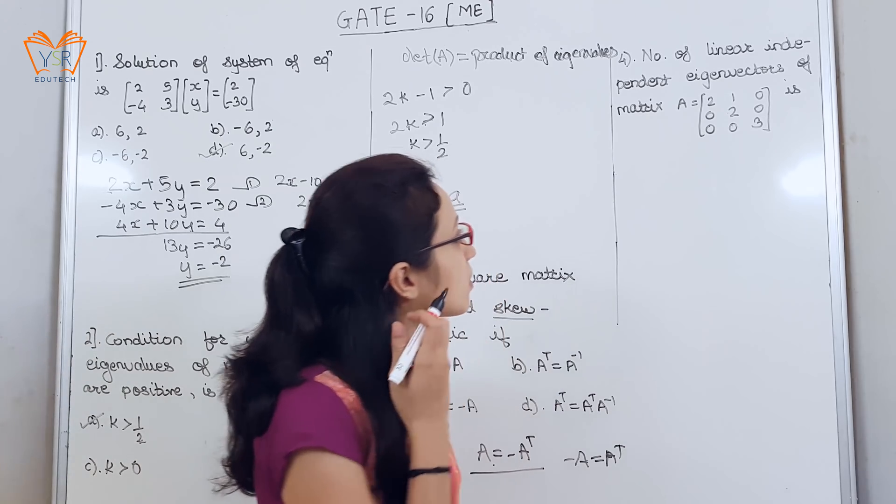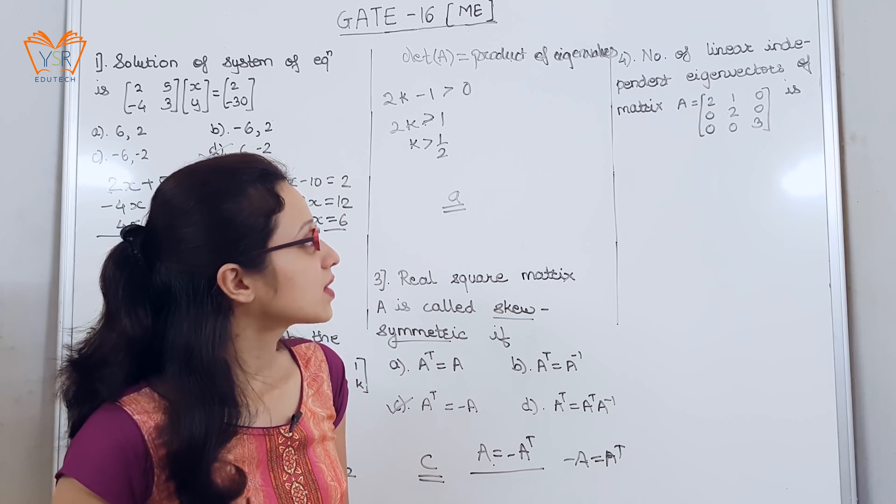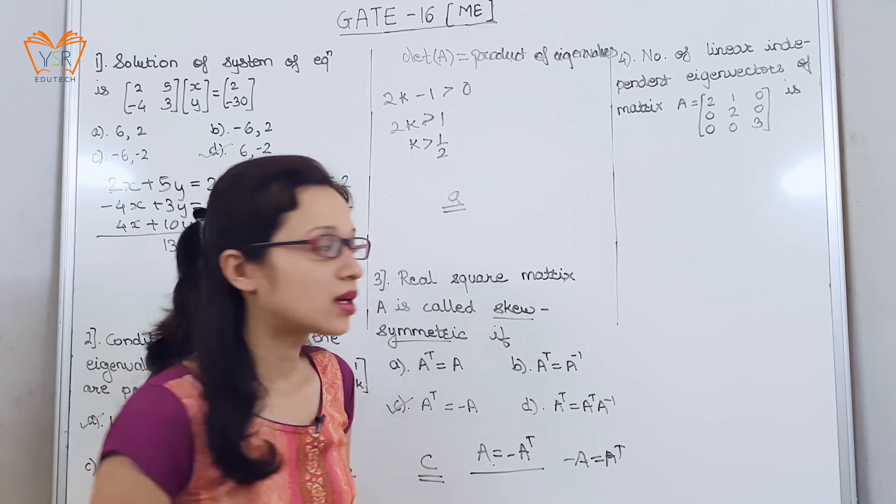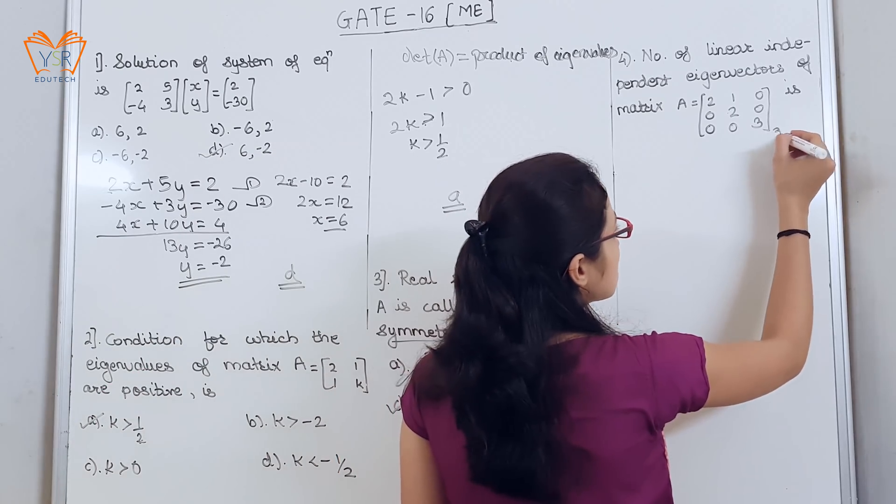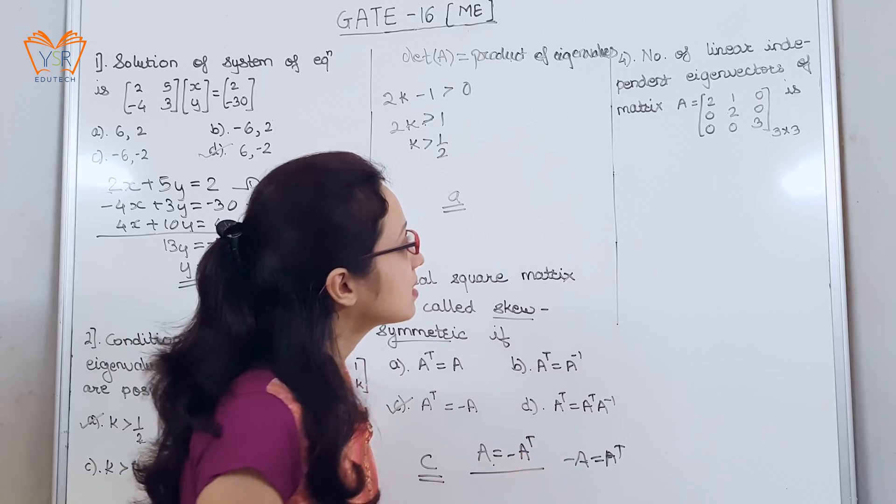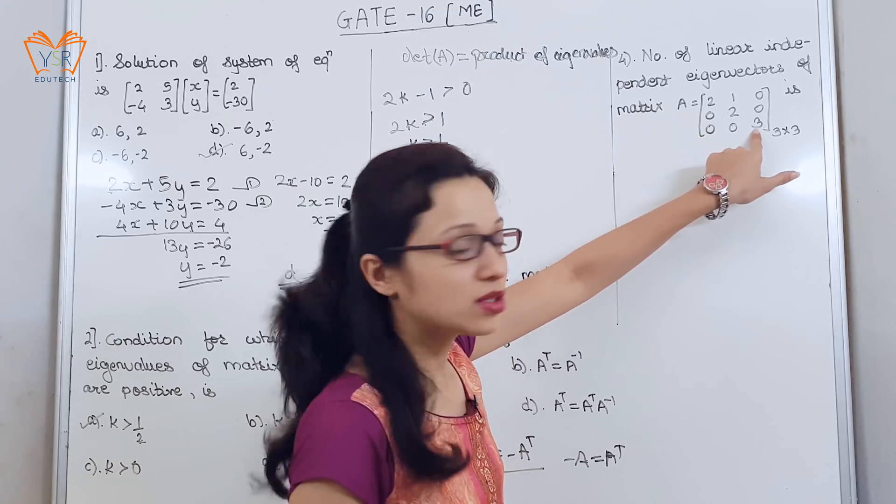The last example: number of linearly independent eigenvectors of matrix A. Now, the given matrix is of order 3 by 3. As the matrix is upper triangular matrix...